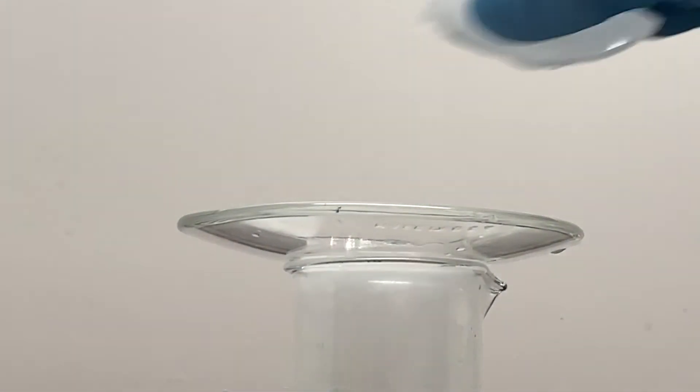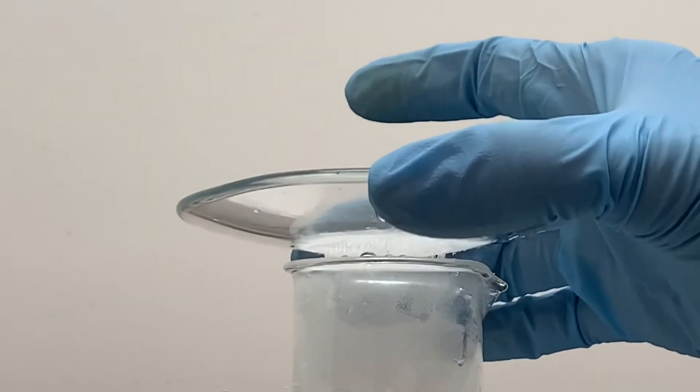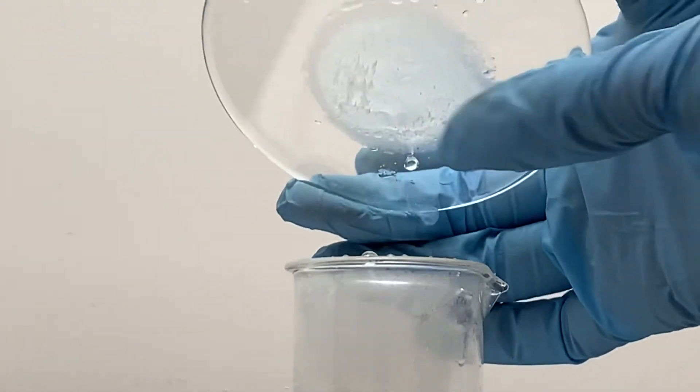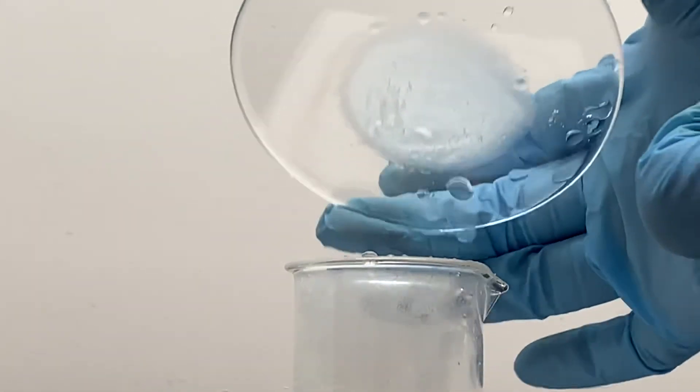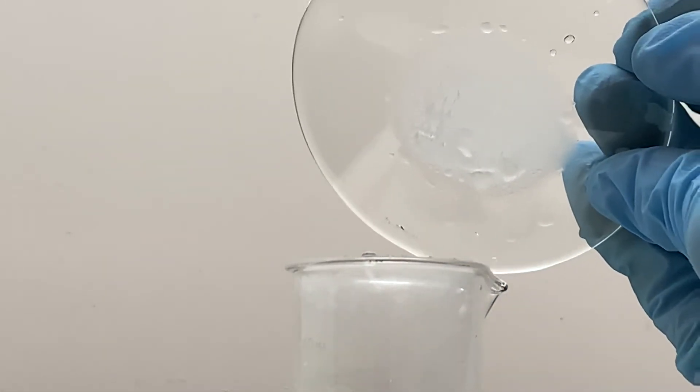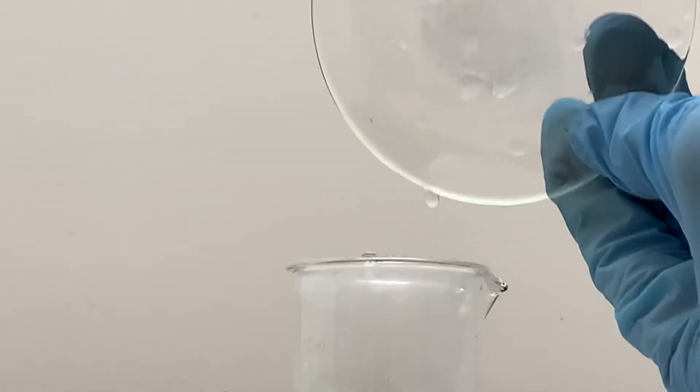So this has been subliming for a while. Let's take a look at what we've got. We don't get a lot of product from this. We can see that we do have some crystals that are formed along the bottom. And what I'm going to do is very carefully transfer these crystals to a pre-weighed watch glass so we can get a mass on them, and then we're going to get their melting point.